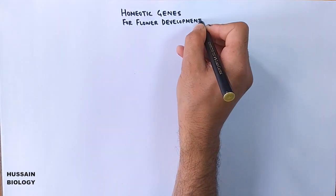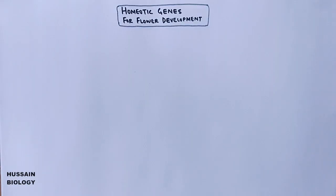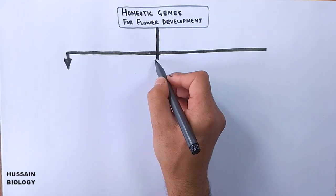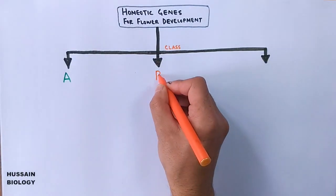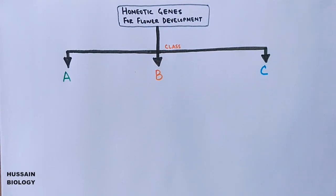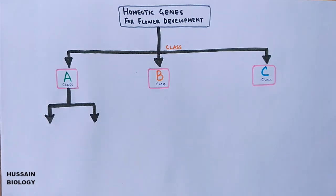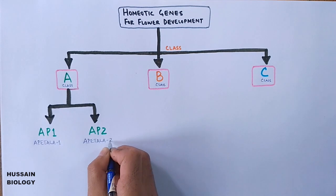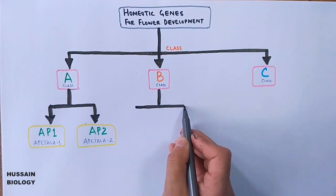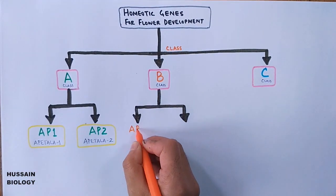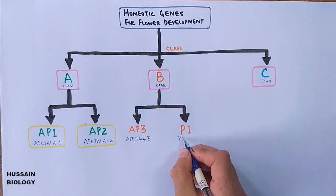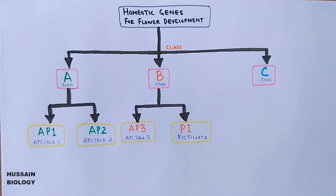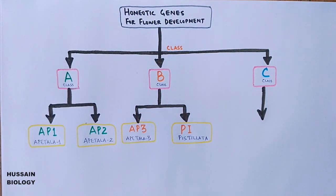Now let's explain the homeotic genes for flower development. There are three classes of genes that aid in flower development: A class genes, B class genes, and C class genes. The A class comprises two genes — AP1 and AP2 (APETALA1 and APETALA2). The B class also comprises two genes — AP3 and PI (APETALA3 and PISTILLATA). The C class has only one gene — AG, the AGAMOUS gene.